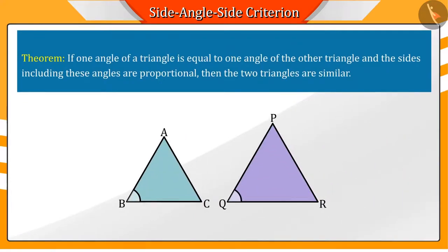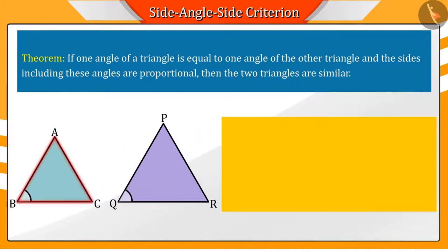Based on this activity, we can conclude that if one angle is equal to the corresponding angle of another triangle and the sides including these angles are proportional, then the triangles will be similar to each other.